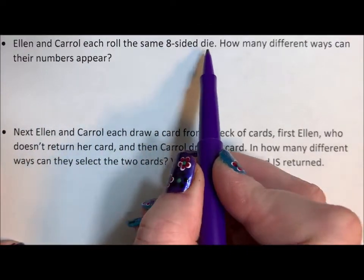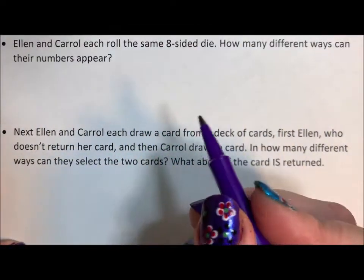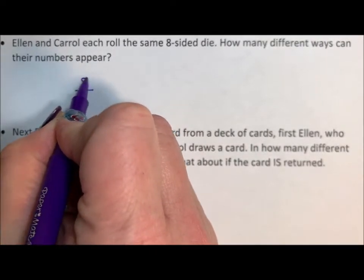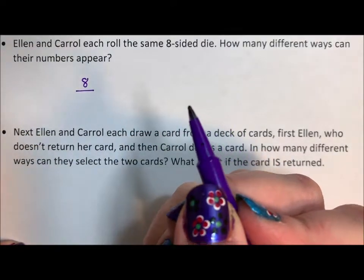So Ellen and Carol each roll the same eight-sided die. How many different ways can their numbers appear? Well, Ellen rolls an eight-sided die. There are eight ways the numbers can appear.